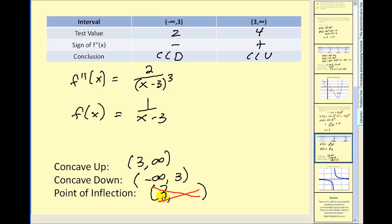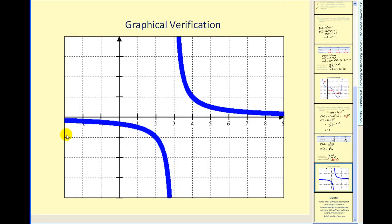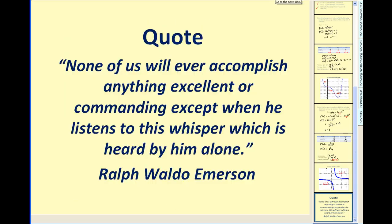It's always good to verify this with a graph. Here we can see that it is concave down on the first interval and concave up on the second, as we found. And we can see why there's not a point of inflection — because we have a discontinuity at x equals three. I hope that helps explain how you can use the second derivative to determine concavity. Thank you for watching.